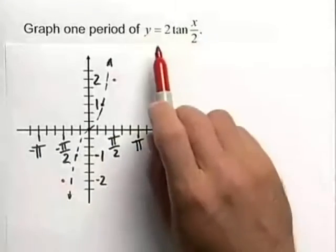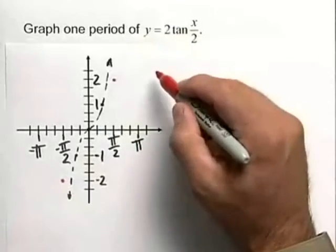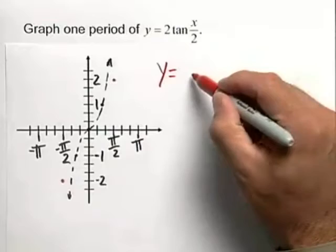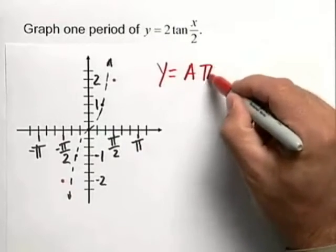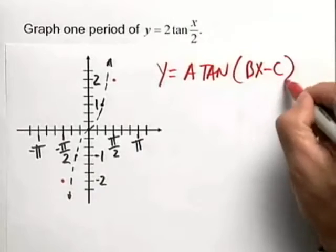Let's consider the graph of a tangent function. We have y is equal to 2 times the tangent of x over 2. This is of our general form y equals a times the tangent of the quantity bx minus c.